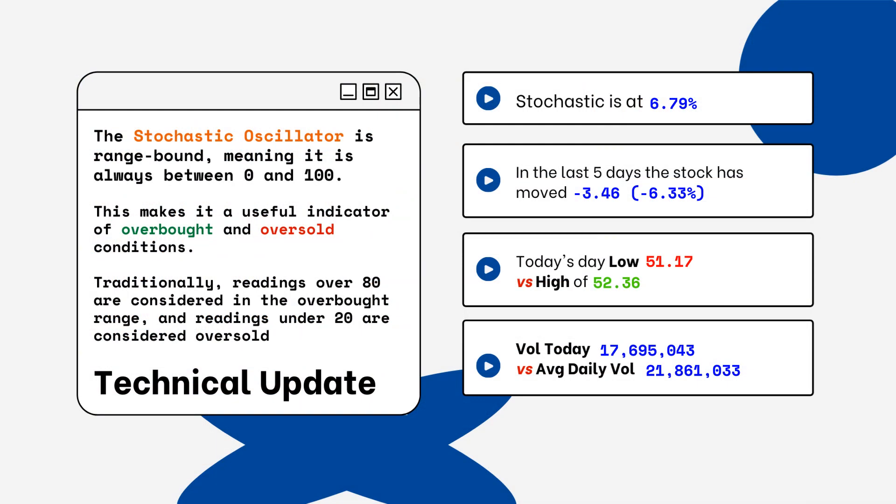You can see on the right side where the stochastic level is on this particular stock. This is a technical update — you want to look for overbought and oversold conditions. Readings over 80% are considered overbought, and readings below 20% are considered oversold. You want to be aware of this when looking at a particular stock.